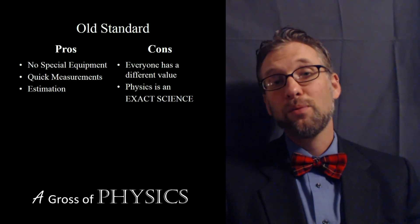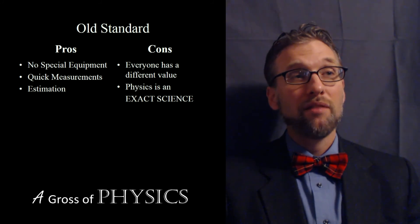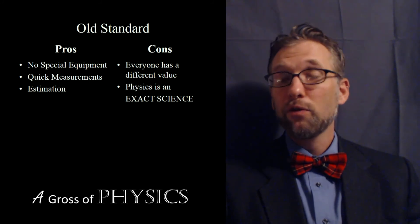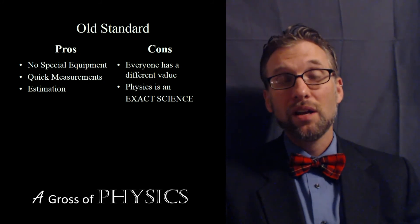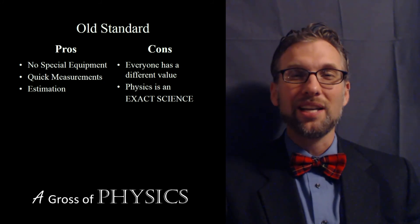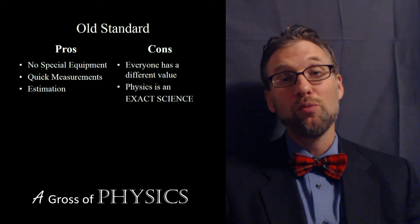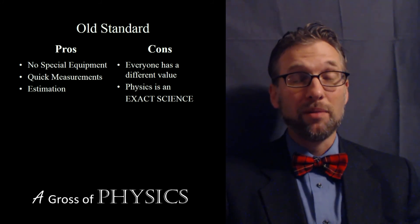So for physics, which is an exact science, it's important that we have numbers that get us very precise values. If we're trying to land a rover on Mars, it's going to be important that we're a little more precise than having hands or the palm or the cubit as our value for estimation.